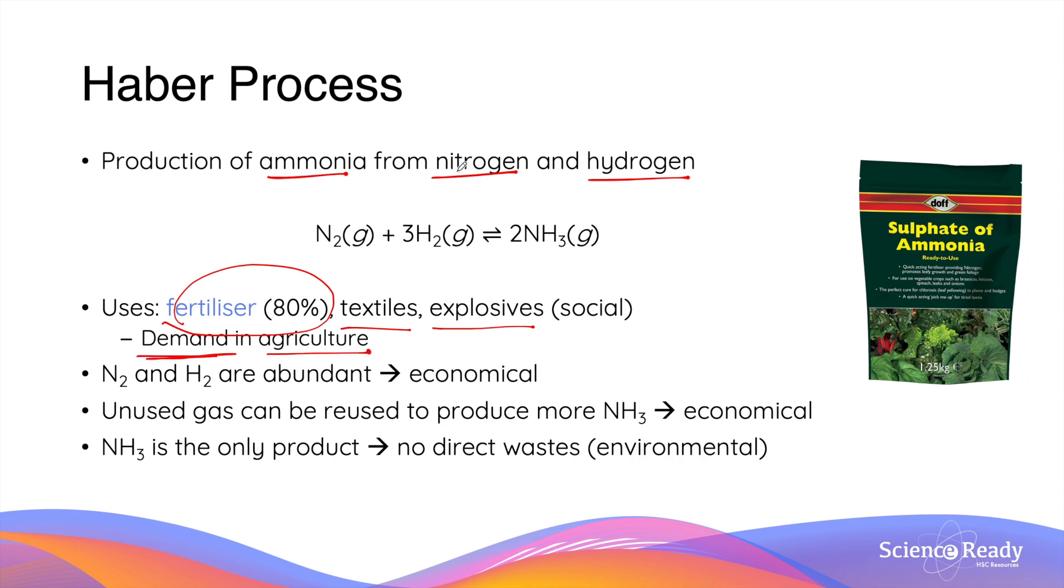The Haber process is also a very economical way of producing ammonia due to the usage of nitrogen gas and hydrogen gas, as these two are the elementary forms of the two elements. Therefore they are very abundant and easily accessible.